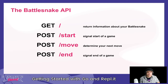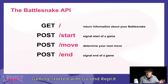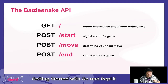The API has four commands, all very simple. The first is a GET to the root URL, where you return information about your BattleSnake: who you are, what color you want to be, what head and tail to display. The game engine uses this to verify your URL is active and to render you on the board. Actually running a game involves three commands: a POST to /start signals the start of a game and provides the initial game board state.